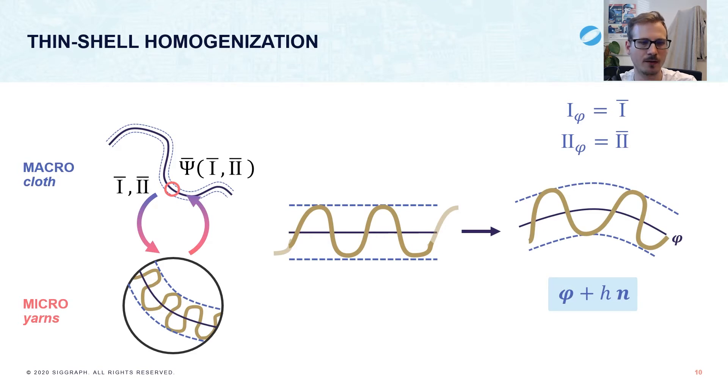Then we deform the yarn pattern along with it. Specifically, we can describe the deformed pattern as phi plus h n, where phi is the surface, n is the normal to the surface, and h is the distance along the normal. We show in the paper that we can compute phi by solving a simple Poisson equation. And here's a 3D example of yarns deforming with the surface.